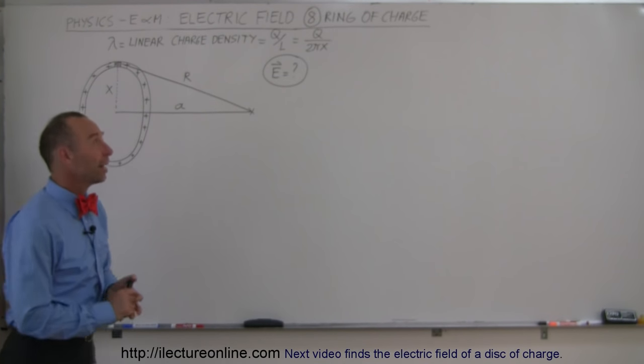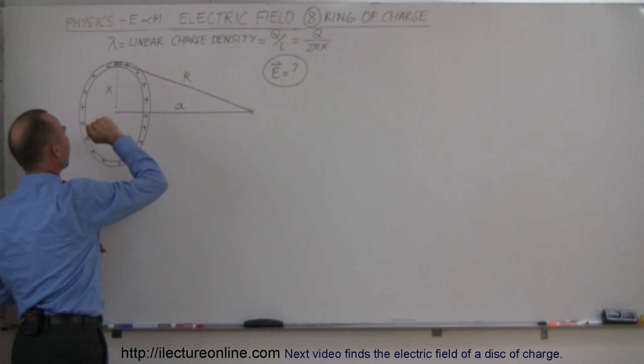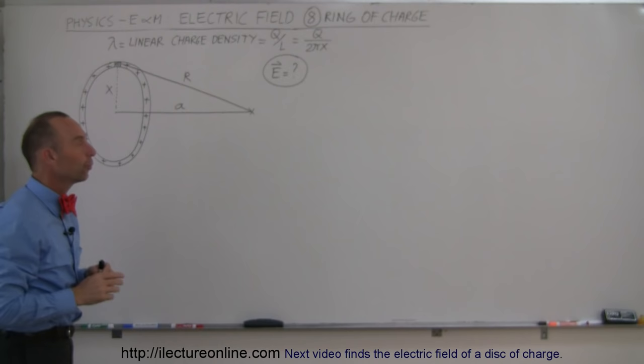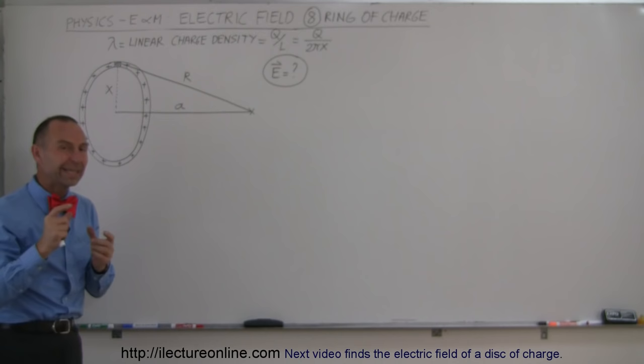Welcome to ElectronLine. We're going to find the electric field caused by a ring of charge. Here we have a circular ring whose radius is x, and it has a certain amount of charge on it. Let's say that charge q was added to the ring, so the linear charge density on the ring is going to be the total charge divided by the total length of the ring, which is q divided by 2πx, with x serving as the radius of the ring.